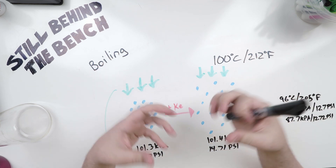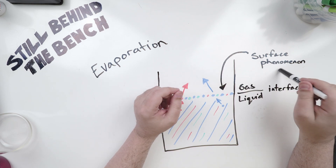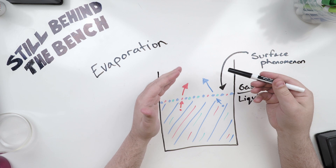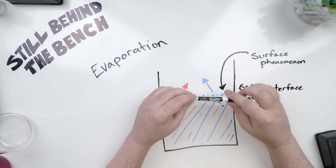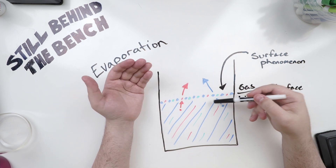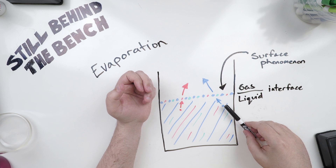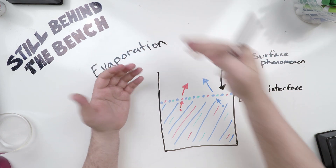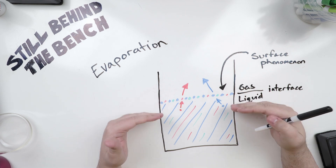Boiling technically happens throughout the bulk of the liquid, not just on the surface. Now we can talk about a simpler concept: evaporation. Evaporation is a surface phenomenon — it only happens at the gas-liquid interface. This happens at any and all temperatures where the gas is a gas and the liquid is a liquid. It's why a glass of water on your countertop will drop in volume if you leave it there. Evaporation occurs when molecules on the surface get enough kinetic energy to overcome the intermolecular forces keeping them in the liquid and just fly off the surface. Water molecules are held in place by hydrogen bonding, but at room temperature one molecule can fly in and smash into another on the surface like a billiard ball, and that molecule just goes flying off — millions of times per second. Some recondense back into the liquid, but eventually the level drops.